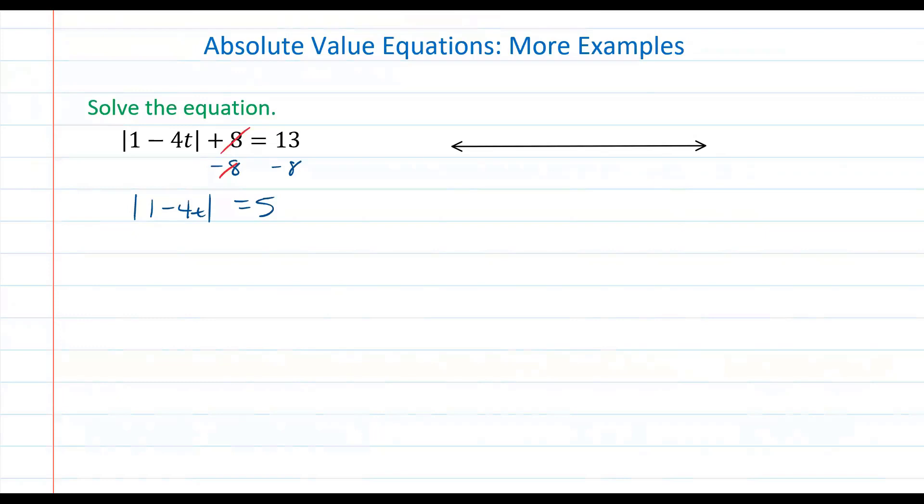What we're going to do here to understand where to go next is refer to our number line. Absolute value refers to distance from 0 on the number line, so what this really means is the distance from 0 is 5.